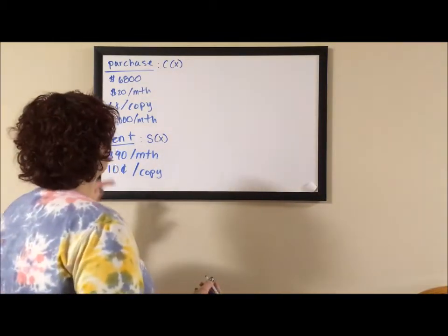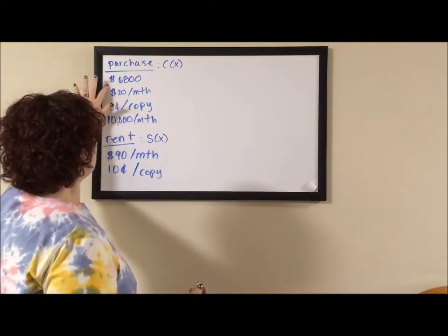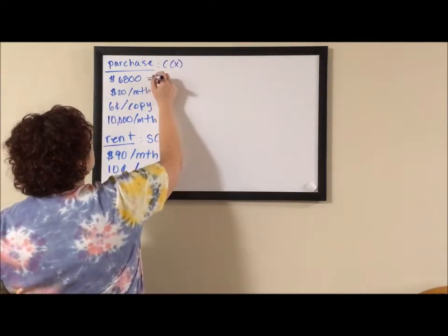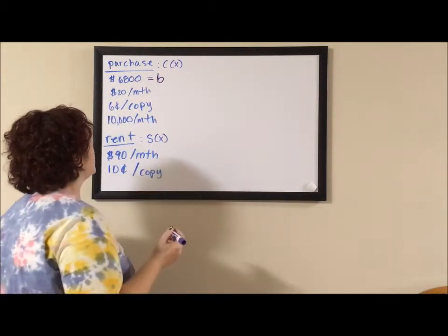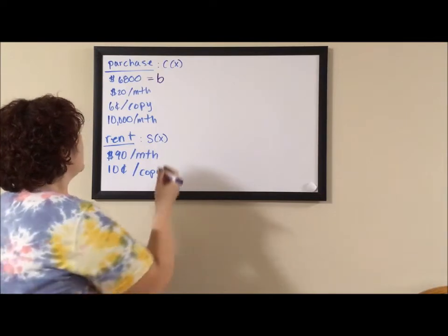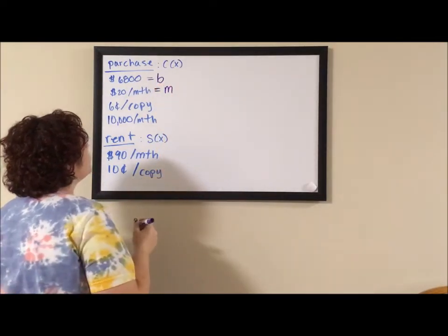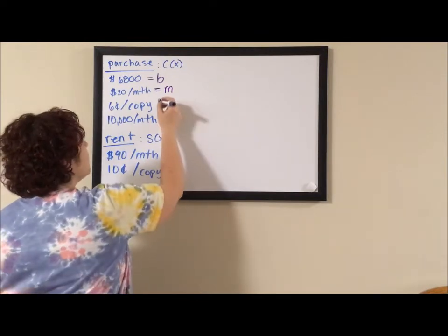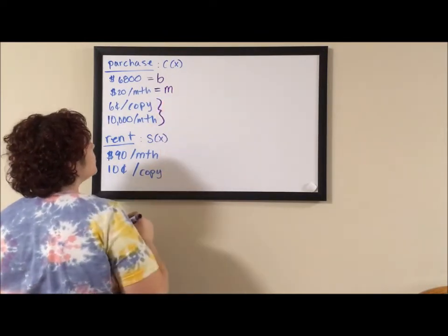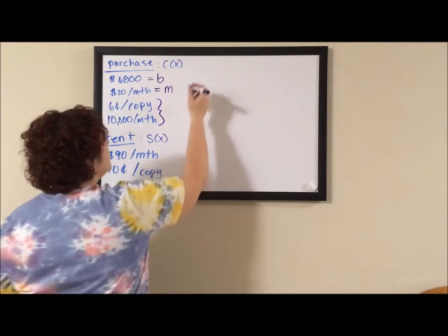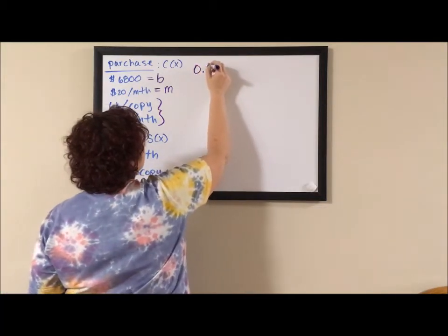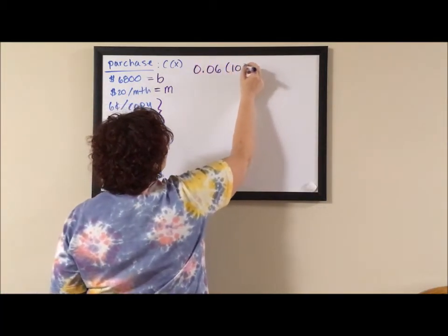So for this first one, we know that our y-intercept is going to be this $6,800. We know that part of our slope is going to be that $20 a month, but this is also a monthly fee. So we need to take $0.06 and multiply it by 10,000.